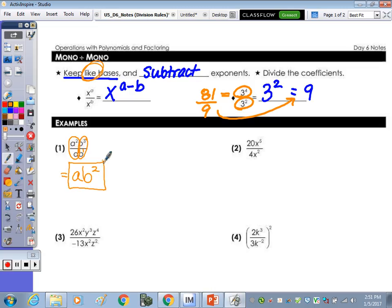If you have a coefficient out front, you want to divide. So number 2, divide the 20 by 4, and you get 5. And then what is x to the 5th divided by x squared? x cubed. I think this is easier rule.